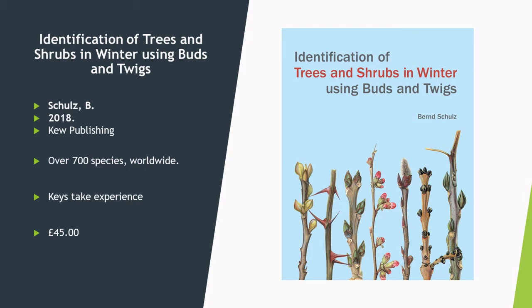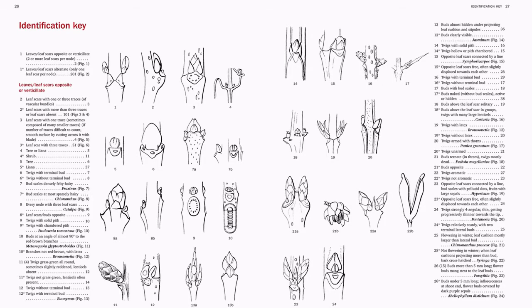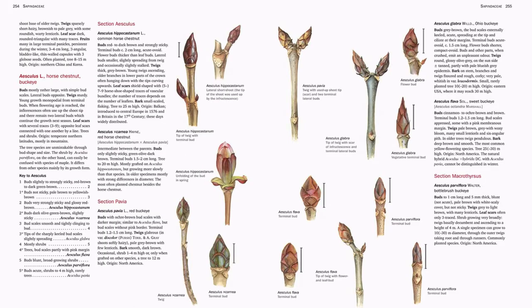Next we come to a huge book by Bernard Schultz, The Identification of Trees and Shrubs in Winter Using Buds and Twigs. Produced in 2018, it covers over 700 species worldwide. The keys are really well written and well defined, but they do take some experience — this is by no means a beginner's book. The illustrations are beautiful, worthy of hanging on a wall. If you're really struggling to separate, say, different members of the horse chestnut or buckeye groups, this covers all sections within that genus. Extremely useful, but more for an advanced botanist.